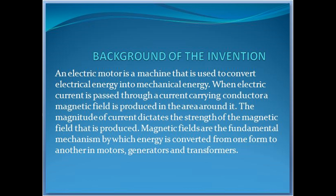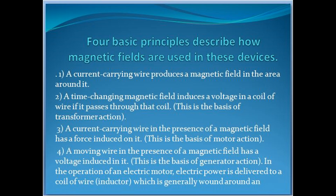Background of the invention: an electric motor is a machine used to convert electrical energy into mechanical energy. When electric current is passed through a current-carrying conductor, a magnetic field is produced in the area around it. The magnitude of current dictates the strength of the magnetic field produced. Magnetic fields are the fundamental mechanism by which energy is converted from one form to another in motors, generators, and transformers. Four basic principles describe how magnetic fields are used in these devices: one, a current-carrying wire produces a magnetic field in the area around it; two, a time-changing magnetic field induces a voltage in a coil of wire if it passes through that coil — this is the basis of transformer action; three, a current-carrying wire in the presence of a magnetic field has a force induced on it — this is the basis of motor action; four, a moving wire in the presence of a magnetic field has a voltage induced in it — this is the basis of generator action.